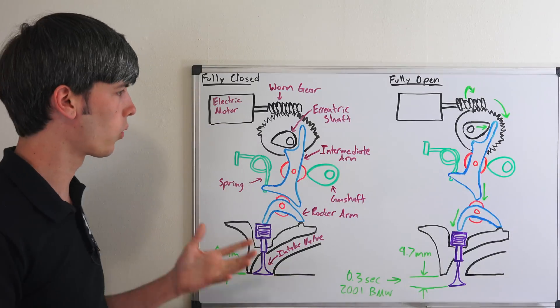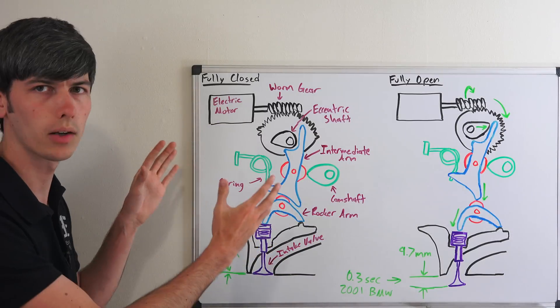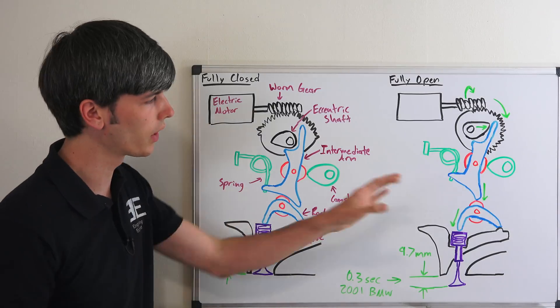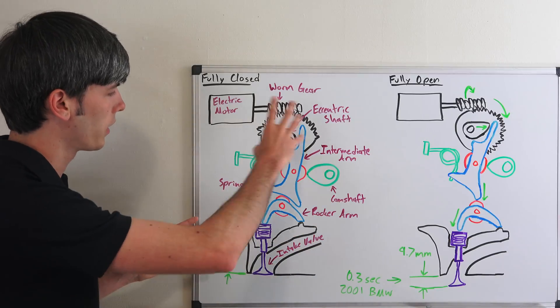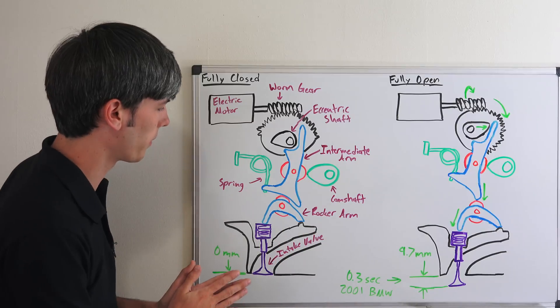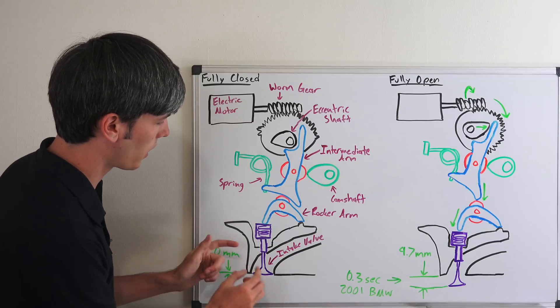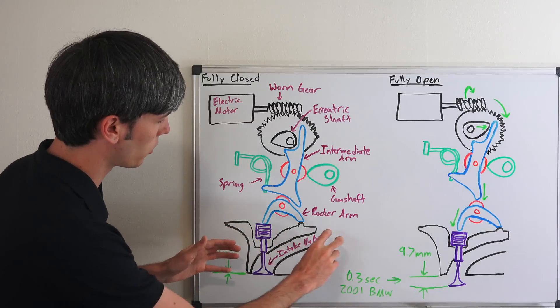So how does the system work? To understand, we're going to look at it with the intake valve fully closed and then fully open. What we have here is the valve train, which is located above the cylinder. Here we have the intake valve and the intake manifold.